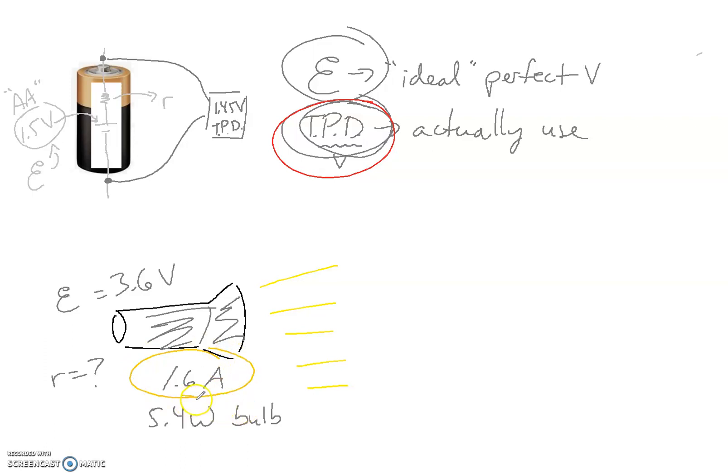Let's do some calculations to figure it out. Let's look at what we're actually getting to use. We're actually using 1.6 amps. Let's see if we can find out the actual voltage being used. With power and current, that would be the power divided by the current. If I divide 5.4 watts by 1.6 amps, I get 3.375 volts. This is the voltage I'm actually getting to use. This is my TPD, my total potential difference. I'm supposed to have 3.6, but I'm only getting 3.375 due to internal resistance. We're losing approximately 0.225 volts to internal resistance.